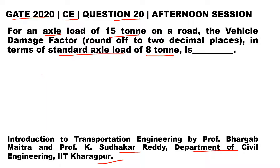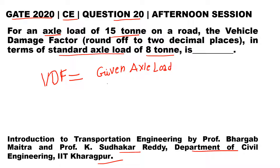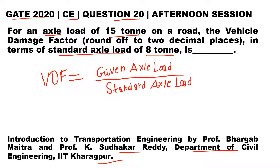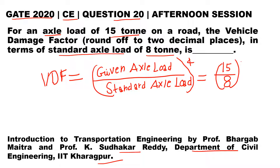It is a pretty simple question. As we know, the Vehicle Damage Factor, represented by VDF, is equal to the given axle load divided by the standard axle load, whole to the power 4. So here, the given axle load is 1510 divided by 810 to the power 4.